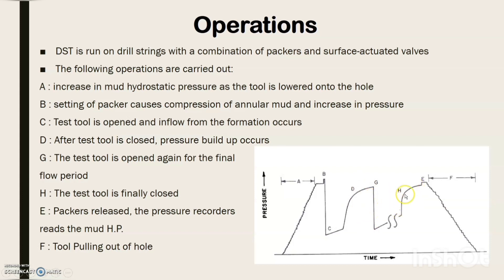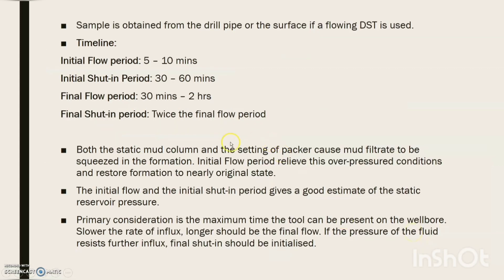Again at G, the tool is opened for the final flow period. At point H, the test tool is finally closed. Packers are released and pressure recorders record mud hydrostatic pressure at E. At F, the tool is pulled out of hole. The sample is obtained from the drill pipe or from the surface if a flowing DST is used. The initial flow period lasts 5 to 10 minutes, while the initial shut-in period is around 30 to 60 minutes. The final flow period is about 30 minutes to 2 hours, and the final shut-in period is generally twice the final flow period. Both the static mud column and setting of the packer cause mud filtrate to be squeezed into the formation.